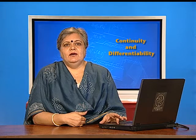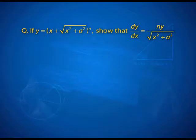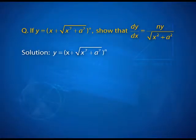Let us take a question where we have a more complex composition. Here the question is: if y equals (x + √(x² + a²))^n, show that dy/dx equals n times y divided by √(x² + a²). If you look at the function y, do you observe that there is composition involved? And not only composition, there is a sum of two functions as well — that is x plus the square root of x² + a². This sum is raised to the power n, so there are definitely more layers involved.